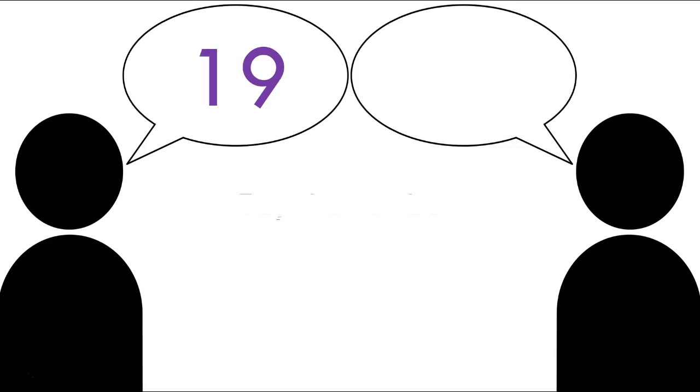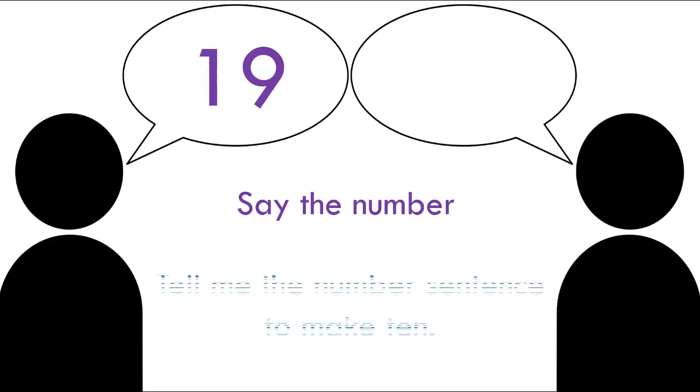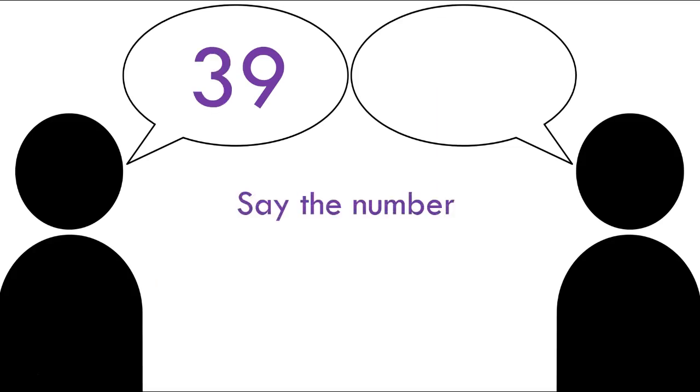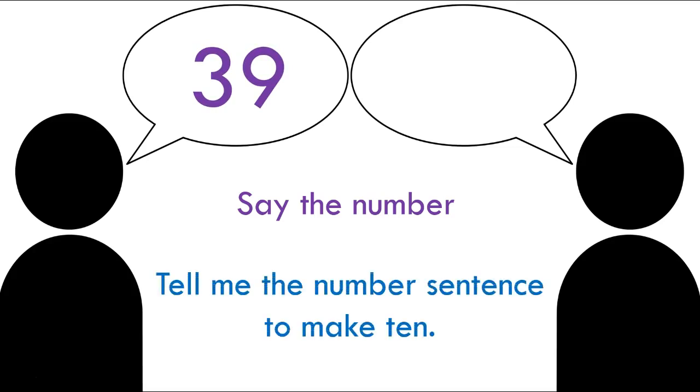Here's the next one. Say the number. 19. Tell me the number sentence to make the next 10. Did you say 19 plus 1 equals 20? If you did, good job. Here's your next one. Say the number. 39. Tell me the number sentence to make the next 10. 39 plus 1 equals 40. That's what you said. Give yourself a kiss on the brain. Excellent job.